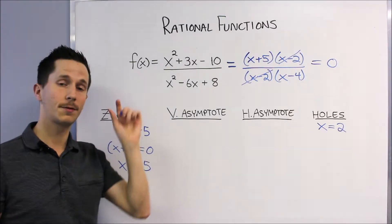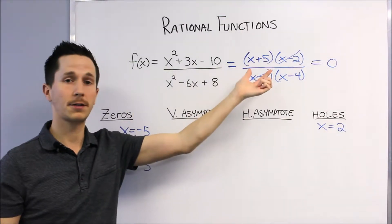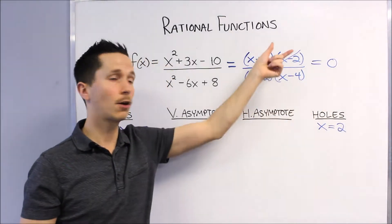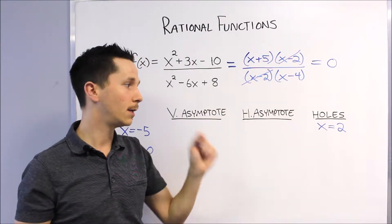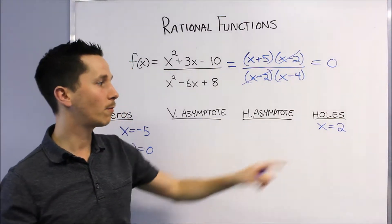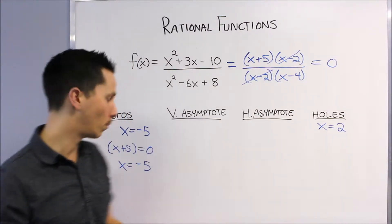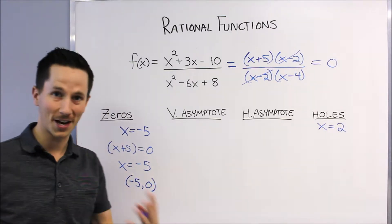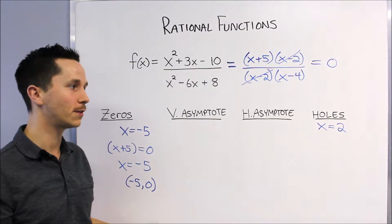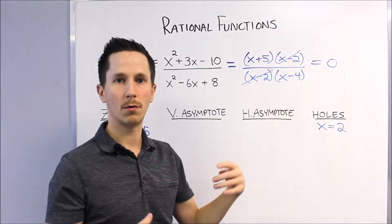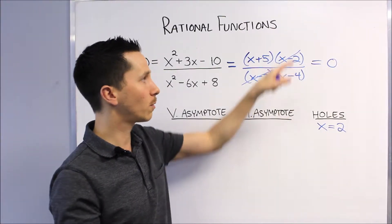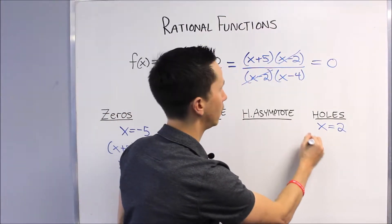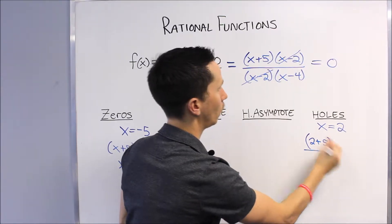So x-intercepts: values that make unique factors on the top 0. Holes: values that make common factors on the top and the bottom equal to 0. Now what if we wanted the y-coordinate of our hole? We know for the zero it's (-5, 0), that's the definition of an x-intercept—the y-coordinate is 0. What about the hole though? We know at x equals 2, what's the y-coordinate? Well here's where we cancel these and we can ignore them, and then just plug 2 back in. So (2 + 5) over (2 - 4).